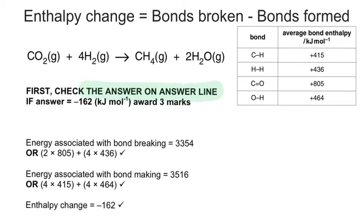And what we can see here, first off, and I know I go on about this enough with these videos, but notice in OCR-A mark schemes, the instruction to the marker is first check the answer on the line. If the answer is -162 kJ mol⁻¹, immediately award three marks. So please make sure you're putting your answer as clearly as possible.